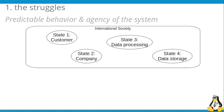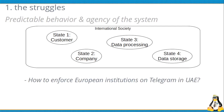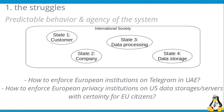But it's a bigger issue when we come to predictable behavior. Consider: a customer in State One is the customer of a company in State Two, which processes data in State Three, but storage is done in State Four. This leads indirectly to problems like how to enforce European institutions on Telegram, which is in the UAE — a current problem in the European Union — and the very old issue of how to enforce European privacy rules when data is stored in the United States, which also wants to protect its territorial integrity and its own laws.